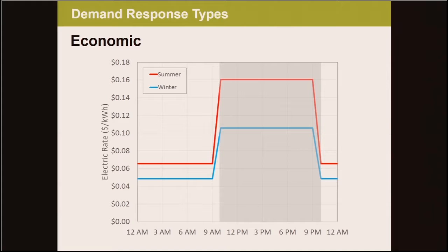I found the local utility's time-of-use rate structure for small commercial buildings. Their peak period runs between 10 a.m. and 10 p.m., and during summer months the cost per kW more than doubles, from 6.5 cents to 16 cents. That big increase will definitely encourage people to find creative ways of shifting their energy consumption to off-peak periods if possible.